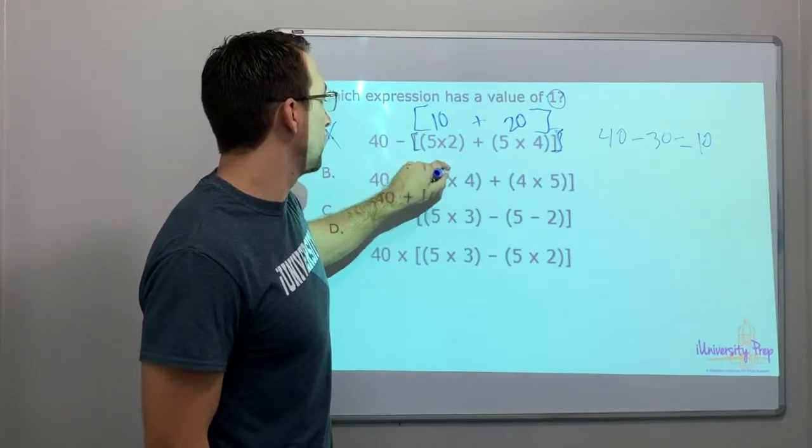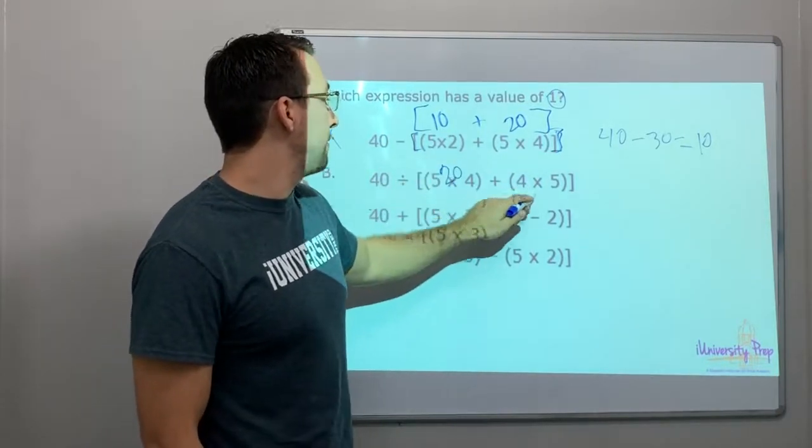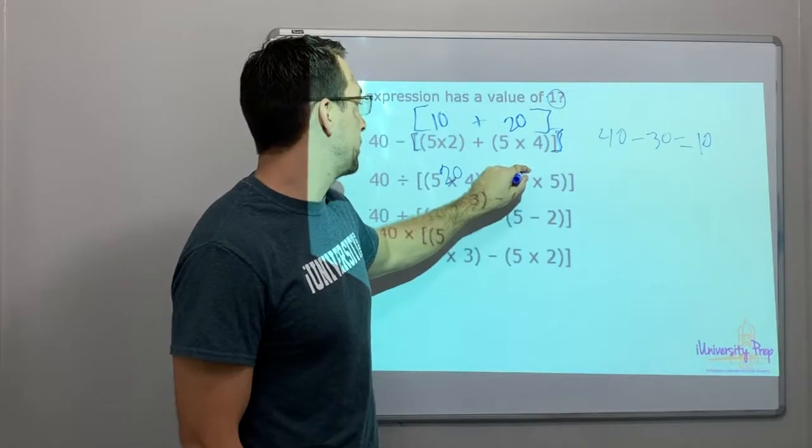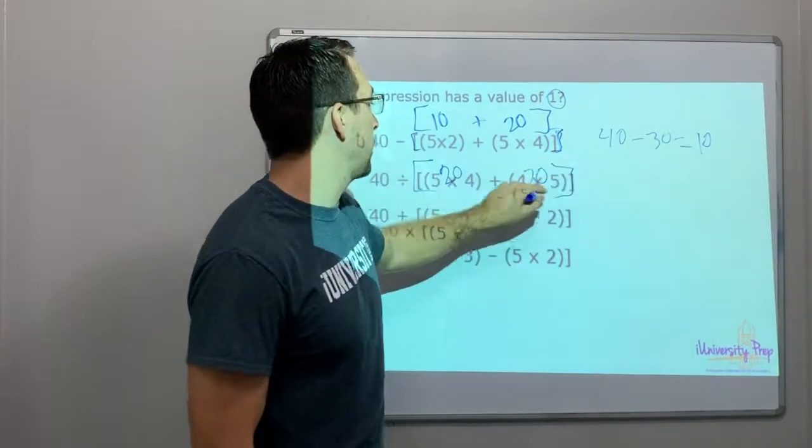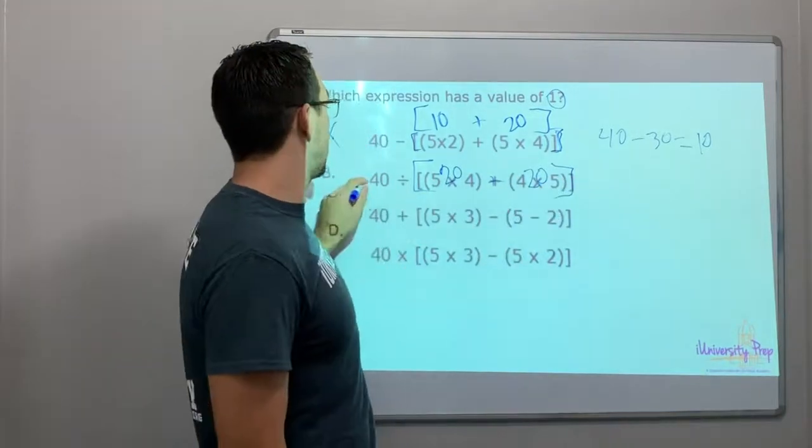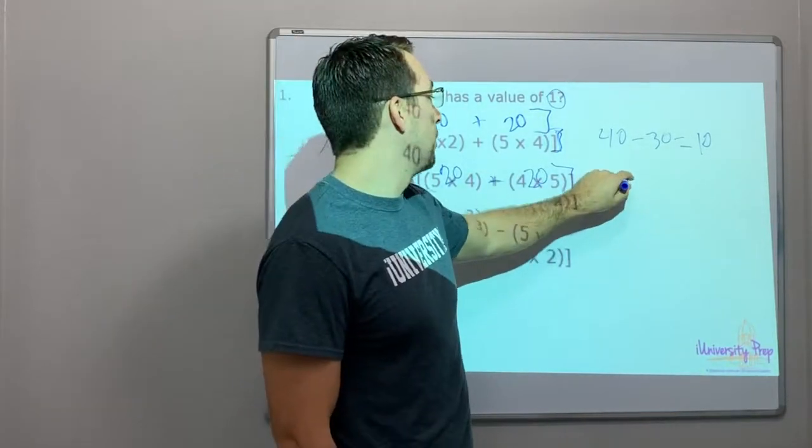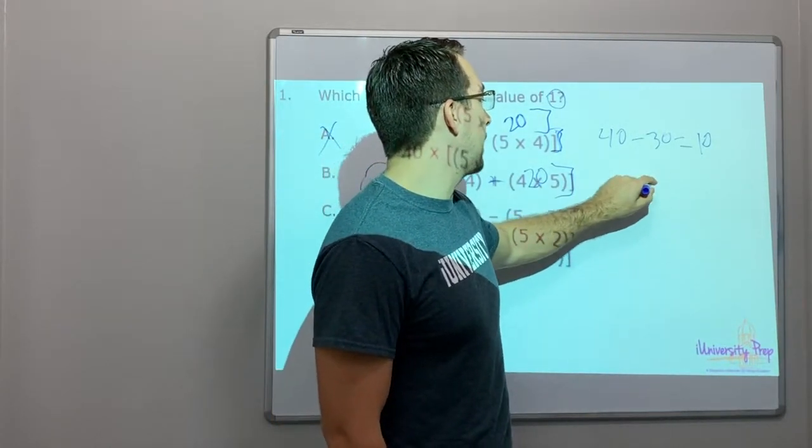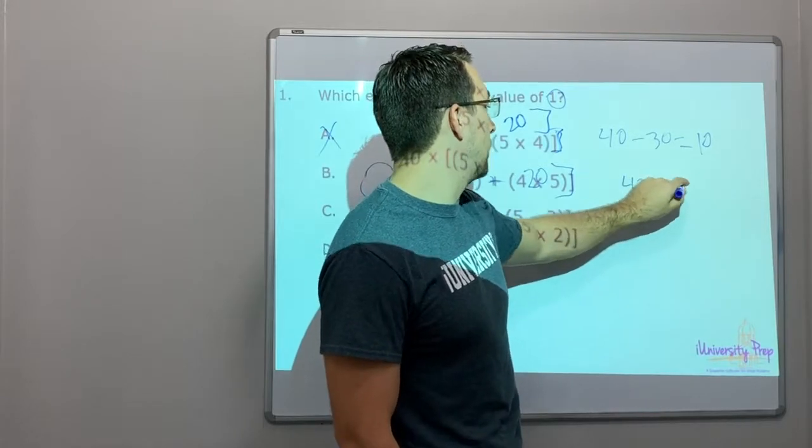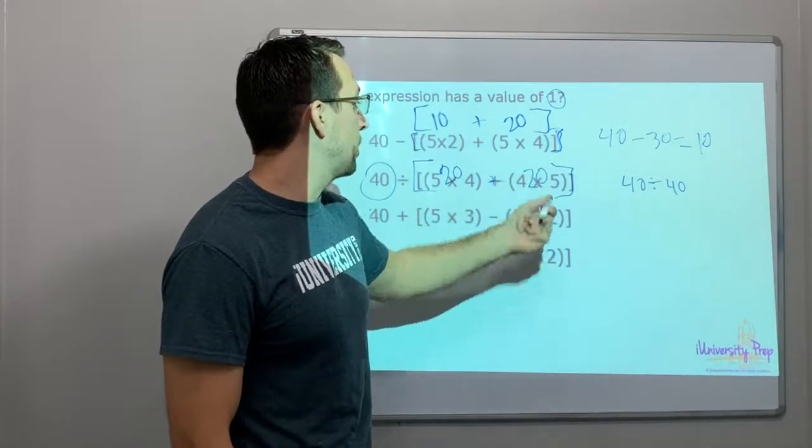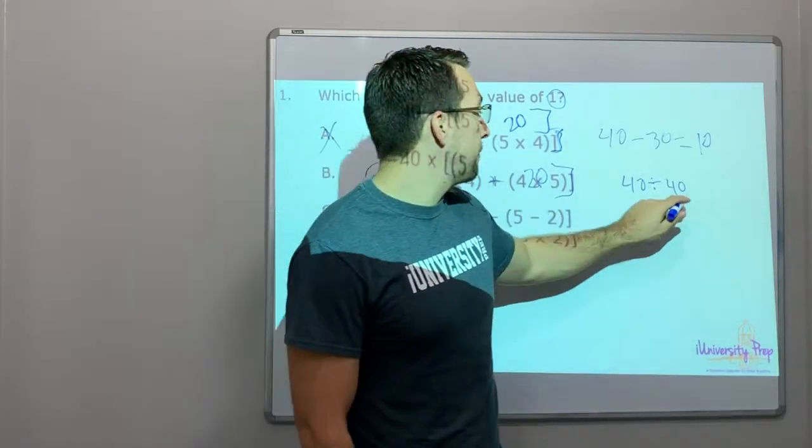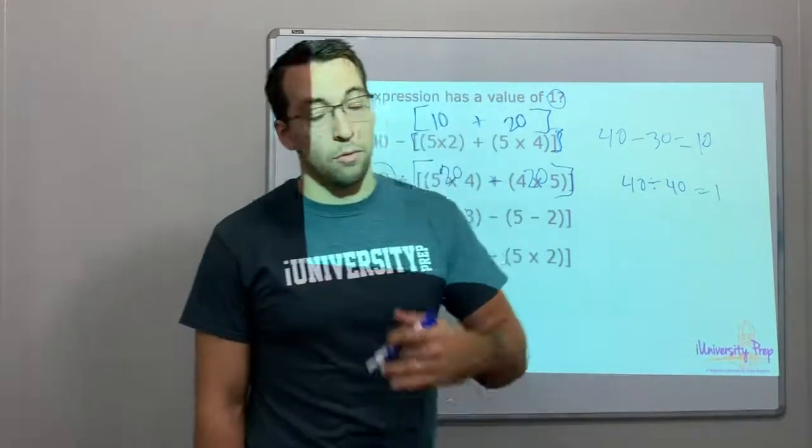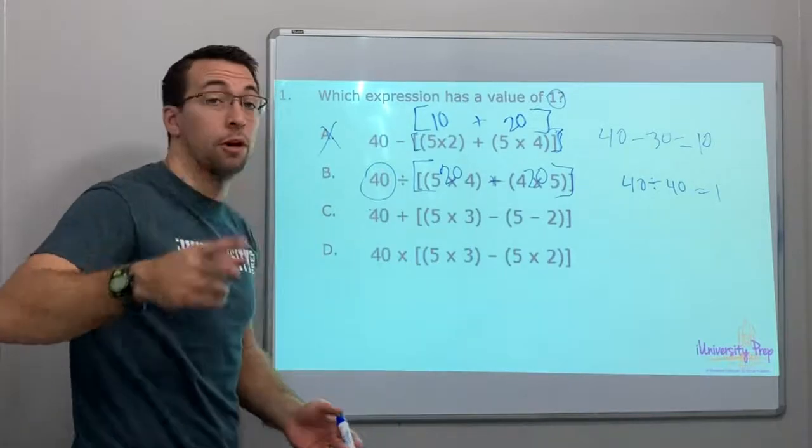5 times 4 is 20, 4 times 5 is 20. Okay, then we have the bracket. What is 20 plus 20? That's 40. So here's our answer! 40 divided by 40, because 20 plus 20 equals 40. So 40 divided by 40 equals 1. How many times does 40 go into 40? One time. So here's our answer.